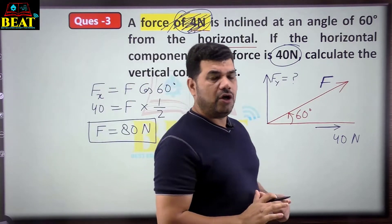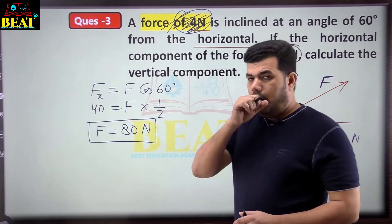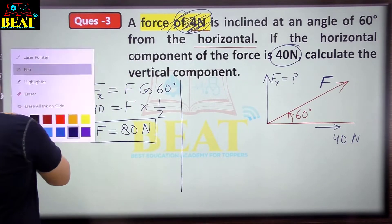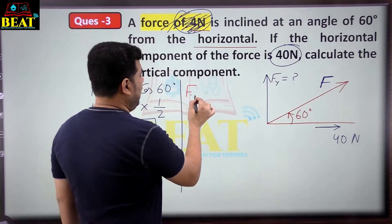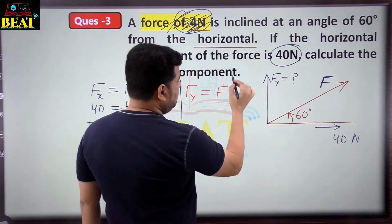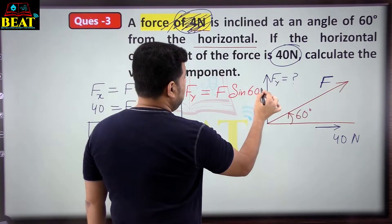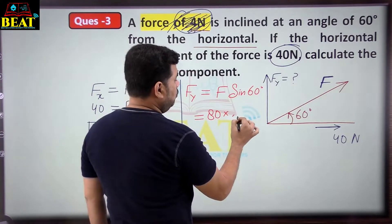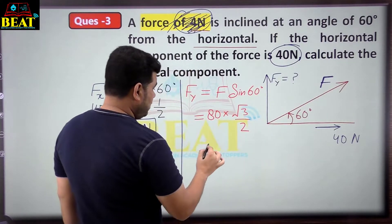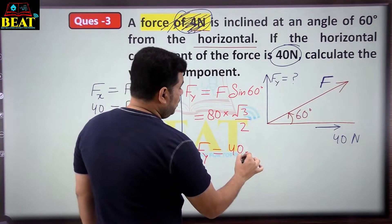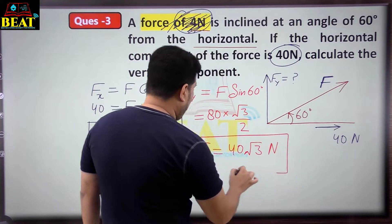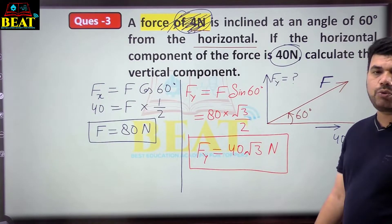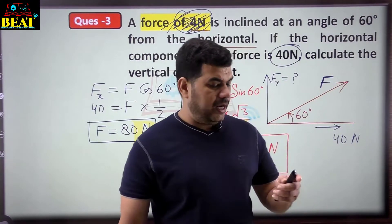F = 80 Newton. Now the vertical component fy = F sin 60 degrees. F is 80, sin 60 = root 3 by 2. So fy = 80 × root 3/2 = 40 root 3 Newton. You got the complete answer: the vertical component of that force is 40 root 3 Newton.